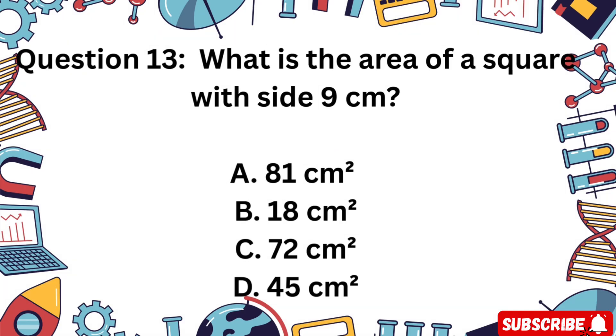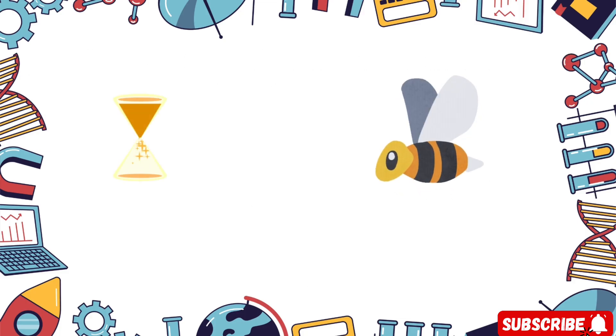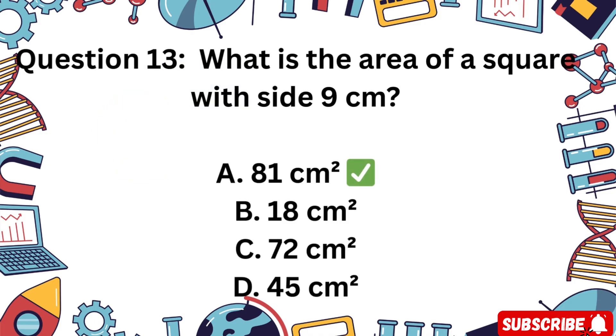Question 13: What is the area of a square with side 9 cm? Is it A 81 square centimeters, B 18 square centimeters, C 72 square centimeters, or D 45 square centimeters? Awesome. 9 times 9 equals 81.